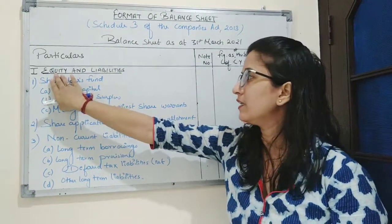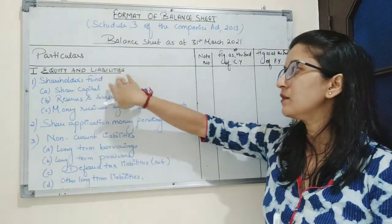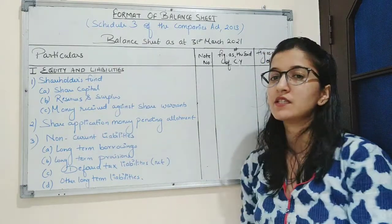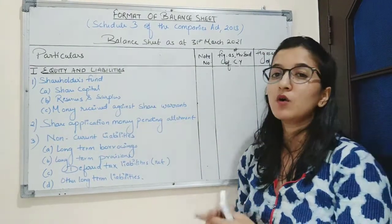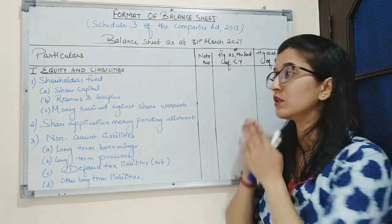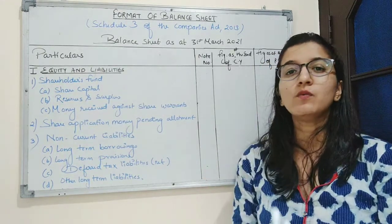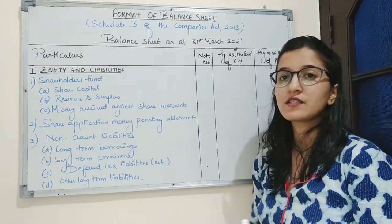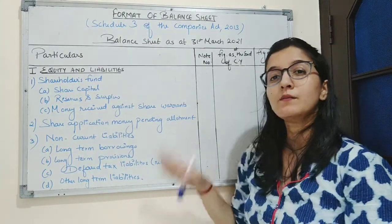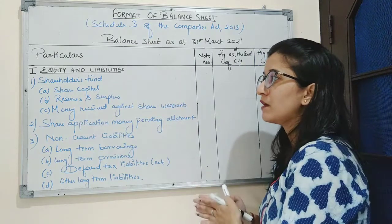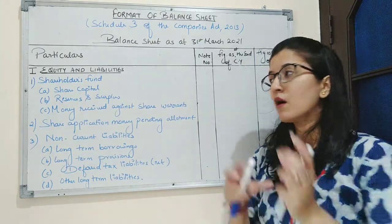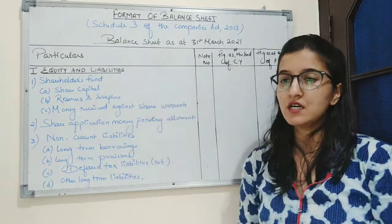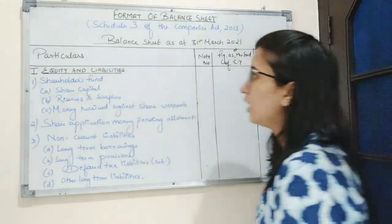In the balance sheet, the first major heading is equity and liabilities, which means the liabilities or the amount which the business has to pay. As we know, business and businessman are separate entities, and we record all transactions from the business point of view, not from the businessman's point of view. So whatever amount the businessman brings into the company, that whole amount is a liability for the company.